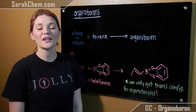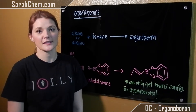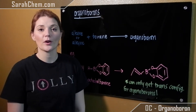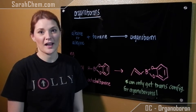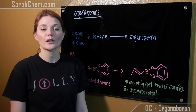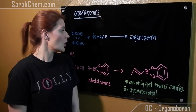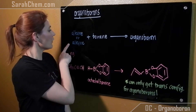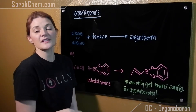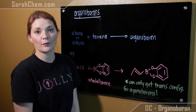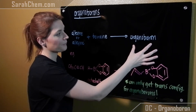Hi everyone, this is a video tutorial on organoborons. We're typically going to see organoborons used in the Suzuki coupling reaction. In this video we just want to look at the preparation of it. So what we're going to do is take either an alkene or an alkyne and add it to a borane. This is going to be a hydroboration reaction where we form the organoboron.